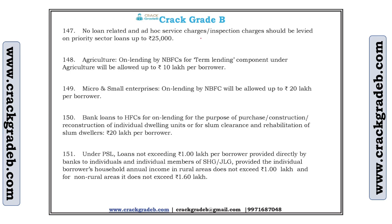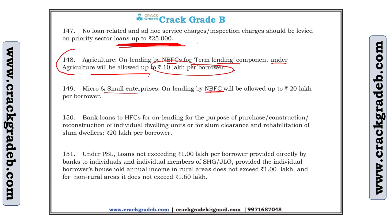Under PSL, banks can lend up to 30 crore to borrowers for green energy purposes like solar panels, power generators, biomass, and windmills. For individual households, the loan limit will be 10 lakh per borrower. No loan-related ad hoc service inspection charges should be levied on priority sector loans up to 25,000 rupees. Agriculture on-lending by NBFCs for term lending components will be allowed up to 10 lakh per borrower. For micro and small enterprises, on-lending by NBFCs will be allowed up to 20 lakh per borrower. Bank loans to housing finance companies for on-lending for purchase or construction are 20 lakh per borrower. For distressed persons, it is 1 lakh per borrower.